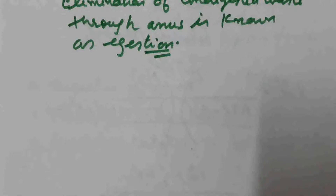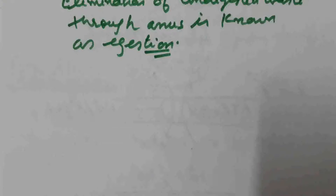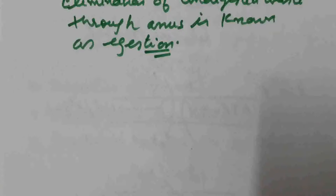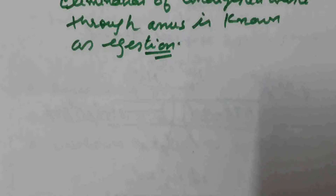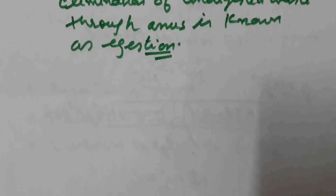From the undigested food, water and some mineral salts are absorbed in the colon area. After absorption of water and mineral salts, these undigested wastes are solidified and are now called faeces. These faeces from the large intestine reach the rectum. When the rectum receives these faeces, it dilates, and an urge is created to defecate. These faeces are expelled out through the anus — the process is known as ejection.